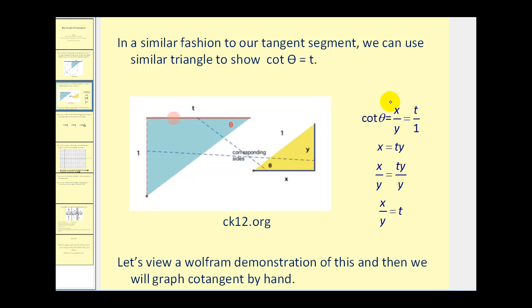Since they're similar triangles and this is a proportion, cross products must be equal. We can multiply x times 1 to get x, and t times y to get ty. Then to solve for t, we can divide both sides by y, and we have now shown that t is equal to x over y. So the cotangent segment is equal to the ratio of x over y.